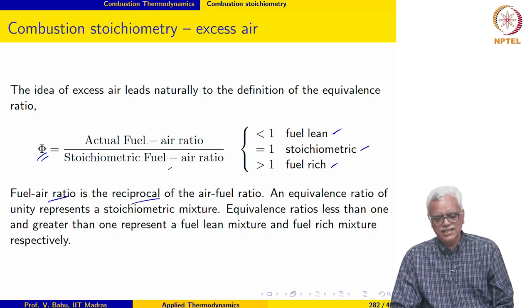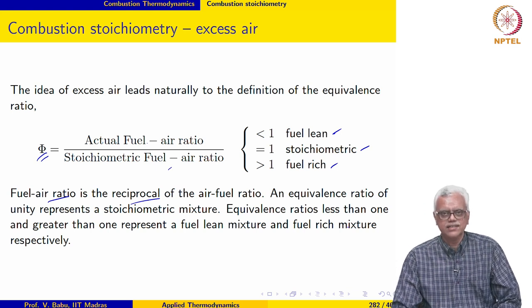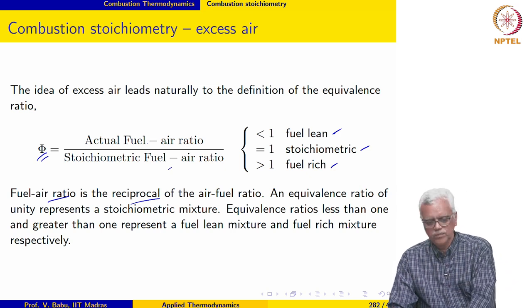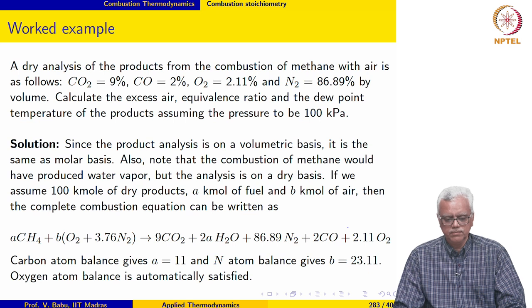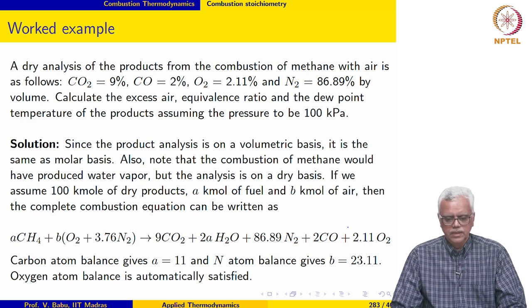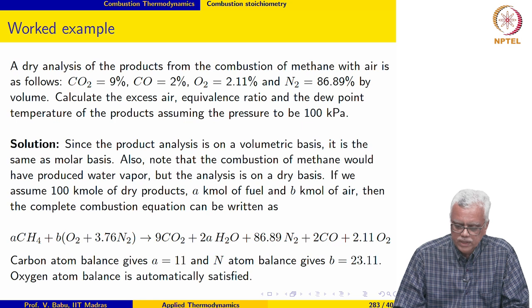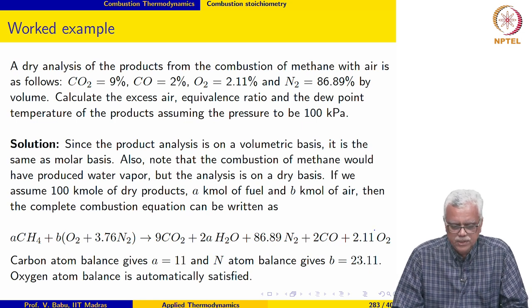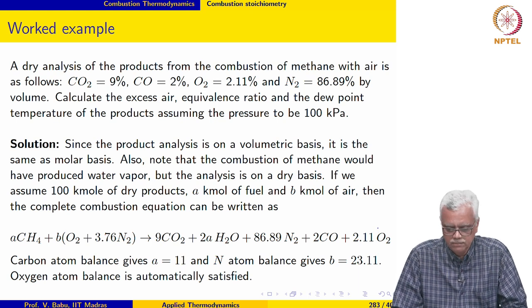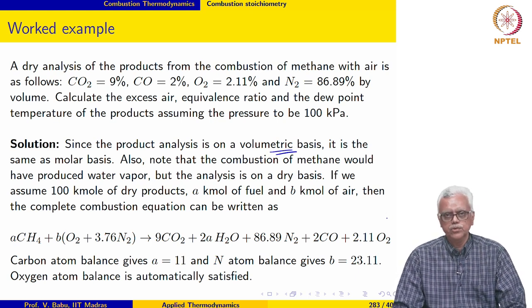For combustion to occur, temperature must be favorable, mixing must be adequate, and flammability limits must be satisfied. There must also be sufficient time for the fuel to react and burn — many practical constraints arise when designing a combustor. The first example: a dry analysis of products from combustion of methane with air gives CO2 9%, CO 2%, O2 2.11%, and N2 86.89% by volume. Calculate the excess air, equivalence ratio, and dew point temperature at 100 kPa.